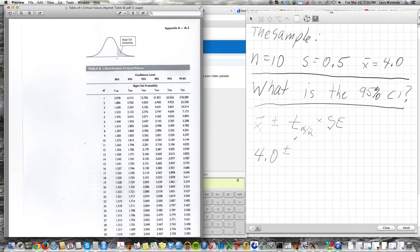Now this t sub alpha over 2, alpha is the confidence or the significance level. For a 95% confidence interval, alpha is 0.05. So alpha over 2 is 0.025, and in Appendix Table B you can see it shows you both. For a confidence level of 95%, you look up t 0.025.